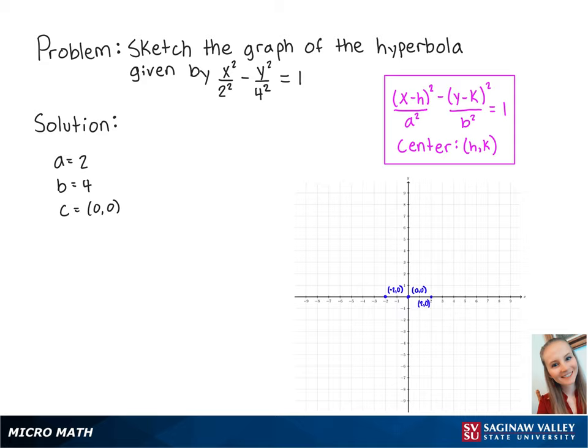Since b is equal to 4, we're going to graph two points for above and for below the center. So the first point is at 0, 4, and the second is at 0, negative 4. Now we're going to use the four outer points to graph a rectangle that looks like this.